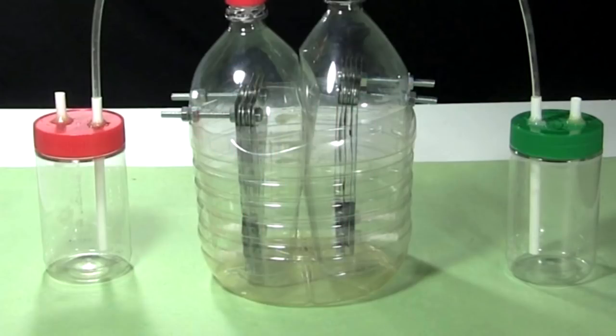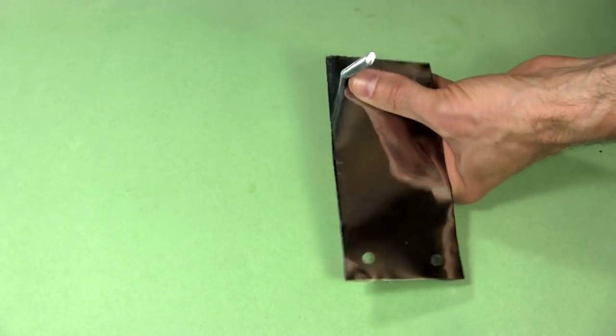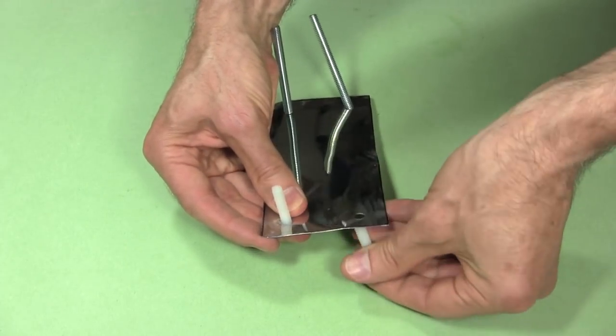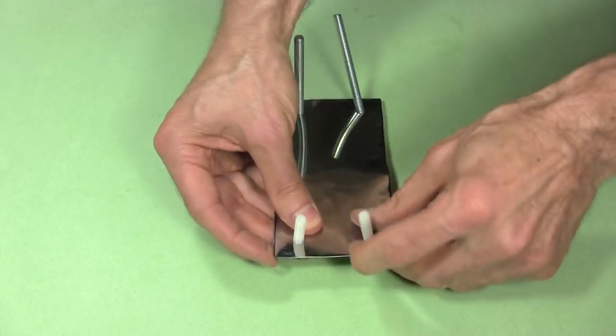Next comes assembling the full electrodes. The top won't be in the fluid, so I use normal steel bolts. For the bottoms I use nylon bolts from Home Depot since they won't corrode.